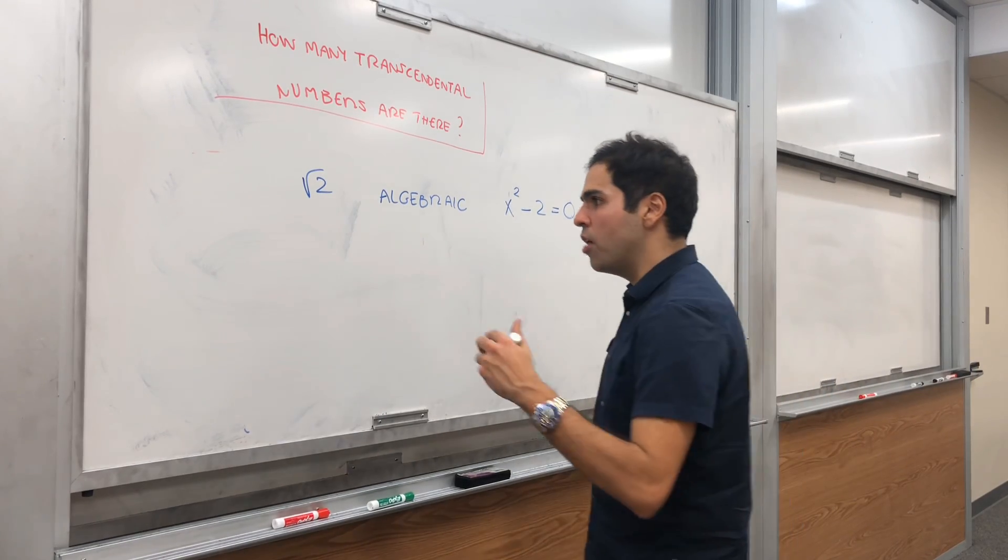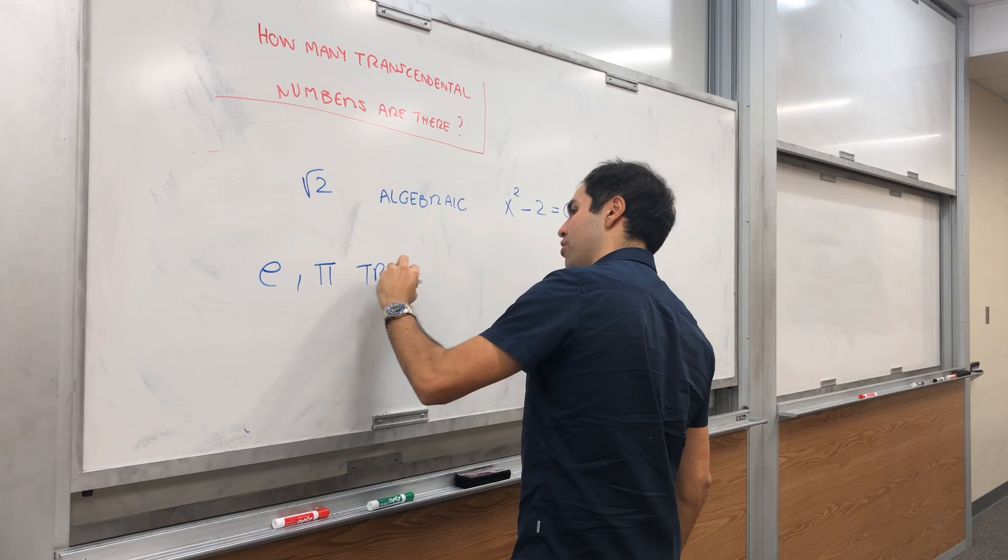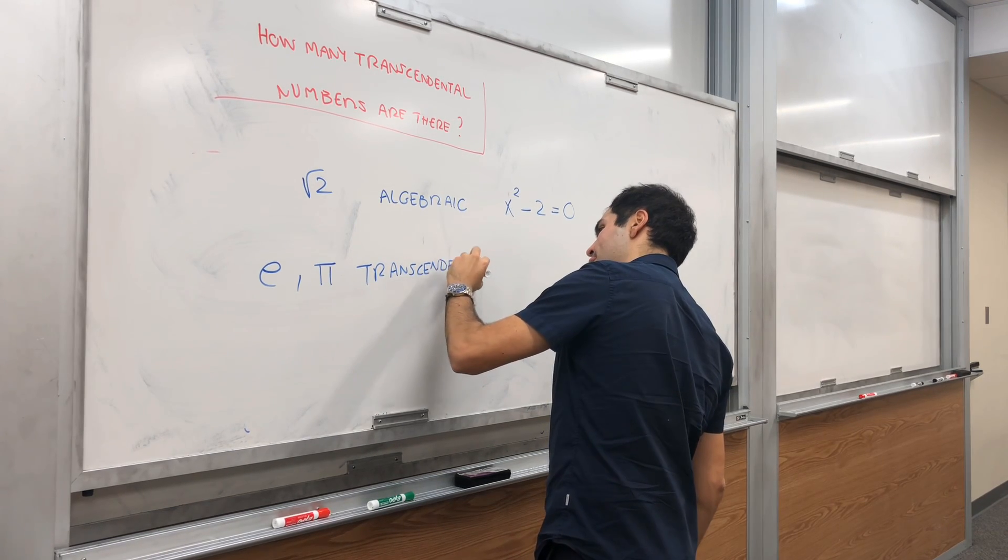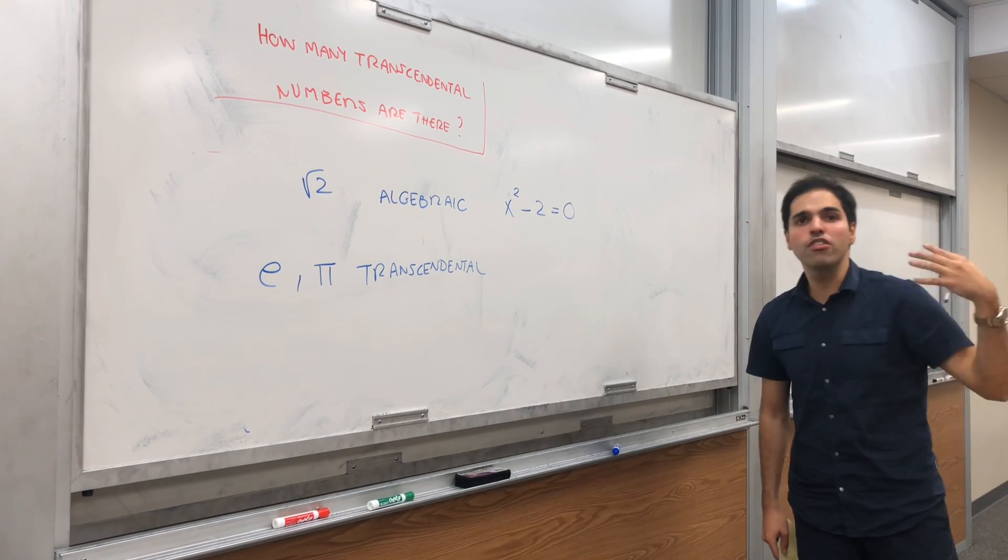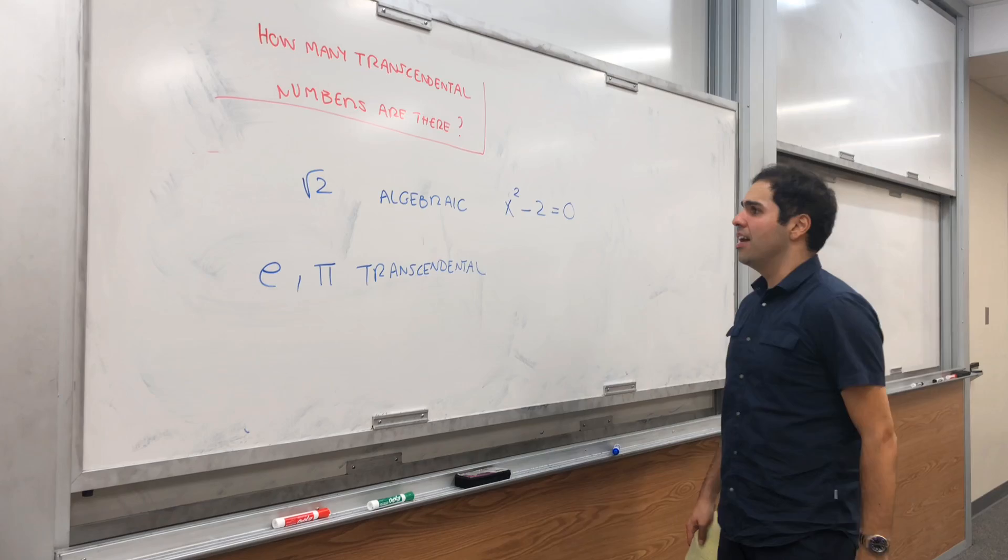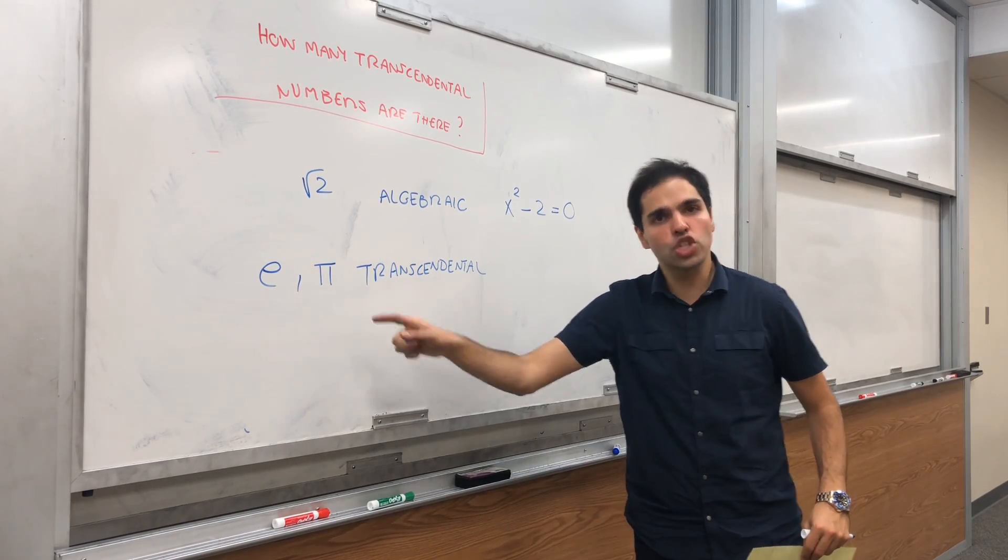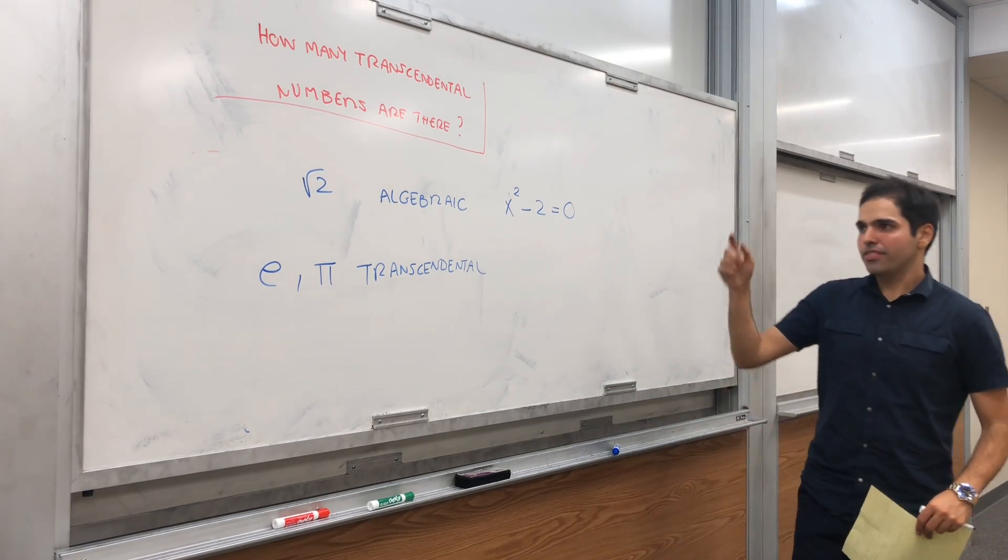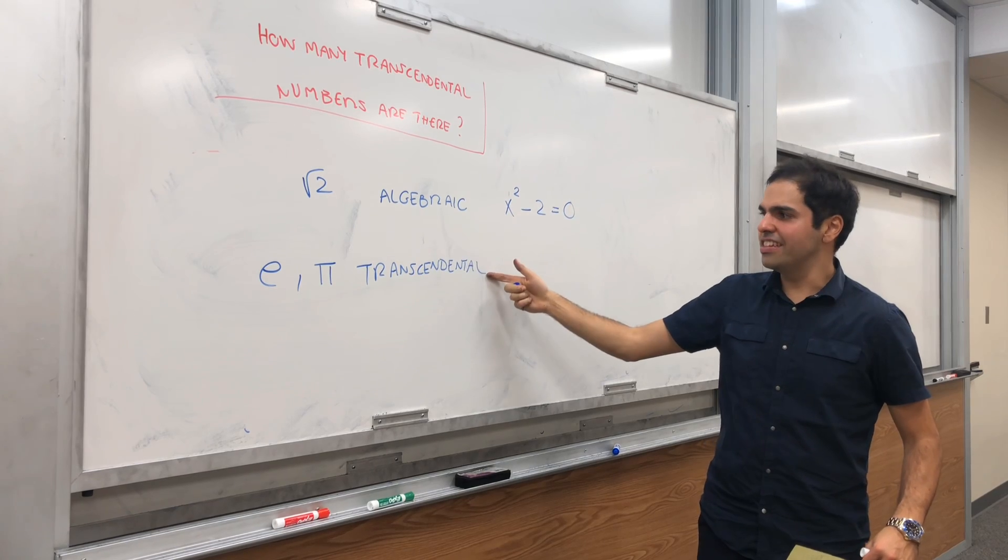On the other hand, there are numbers like e or pi which are transcendental. In other words, those numbers can never be written as the zero of a polynomial with integer coefficients. And by the way, I have made two videos that show why they're transcendental. Now, there are two kinds of numbers: algebraic or transcendental.